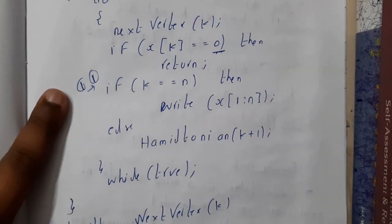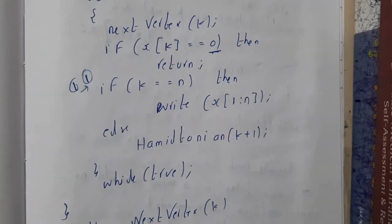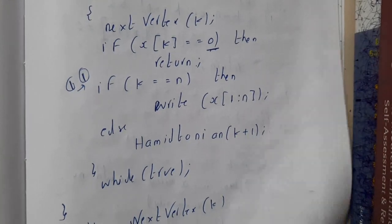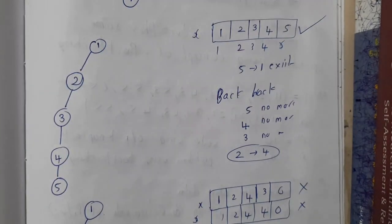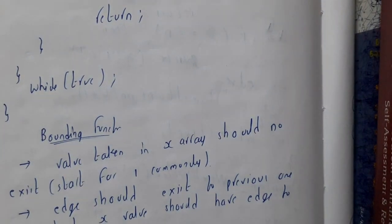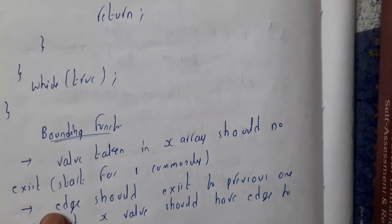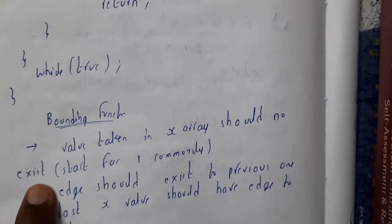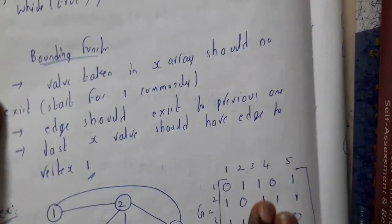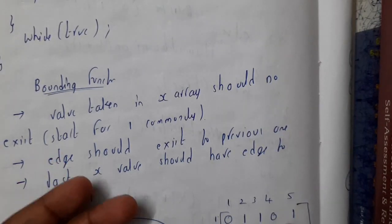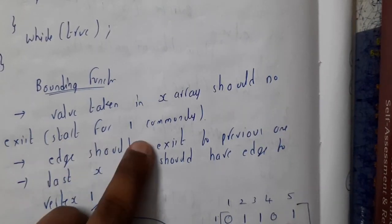Sorry for not explaining the algorithm step by step, as I don't have full clarity on it. Now let us go through the bounding function for Hamiltonian cycle. Values taken in the array should not be repeated — whatever values you are taking in the array, that should not already exist.